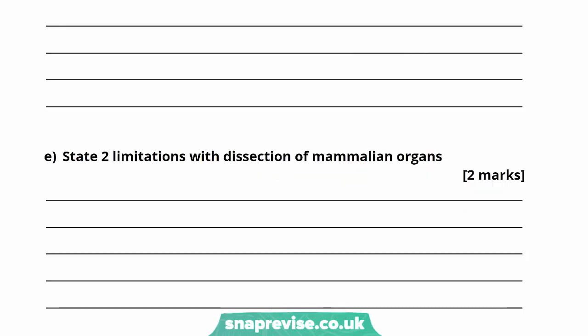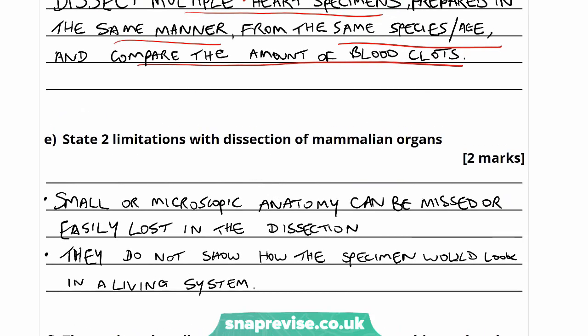The next question asks: state two limitations with dissection of mammalian organs. One limitation is that small or microscopic anatomy can be missed or easily lost in the dissection. Dissection gives a good overview of large-scale anatomy and general layers, but we can't really see the detailed anatomy. If someone isn't very experienced, they could be cutting through different layers and missing things in between. For example, with the fish gills experiment, the filaments are very fine and thin and could easily be mistaken for just more tissue.